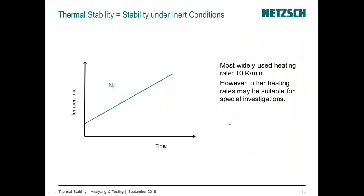Thermal stability is usually investigated with common measurement parameters: 10 K/min is a very common heating rate, and gas flow rate is usually kept constant at 20–40 mL/min. However, the heating rate can change and will influence results, so when comparing measurements, always verify that conditions are identical. Changing heating rates is a common technique especially for kinetic evaluation, where the time-temperature correlation is obtained by running three to five tests with different heating rates.